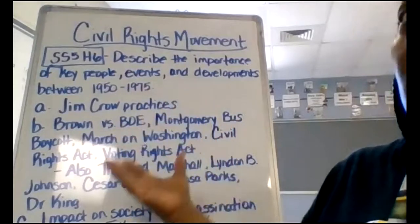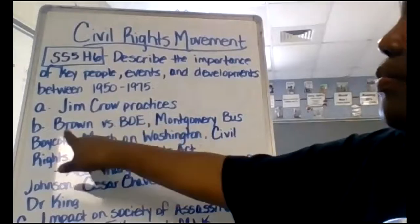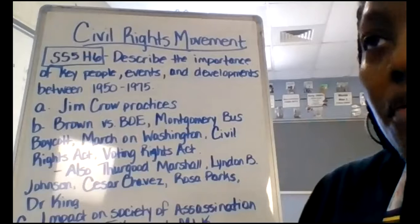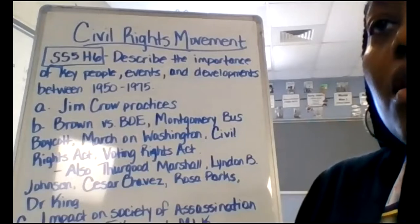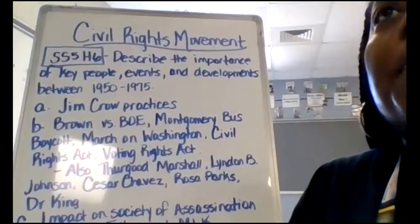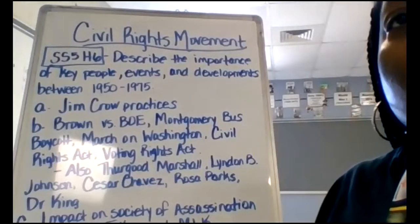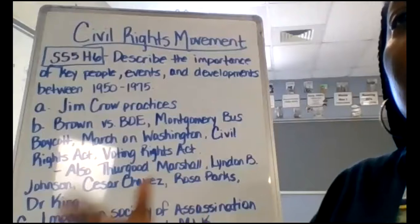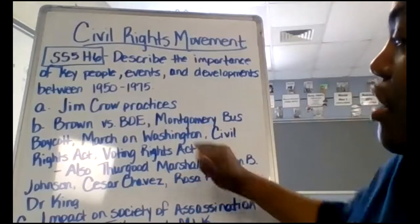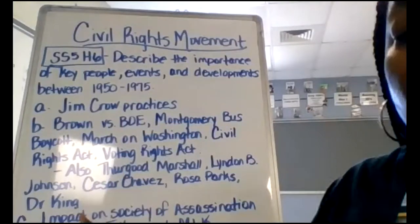Some other important civil rights activists: we looked at Thurgood Marshall, who was the lawyer of Linda Brown and her family. Lyndon B. Johnson became president after the assassination of John F. Kennedy. Cesar Chavez was also a civil rights activist who helped farmers and migrant workers — he actually gave a lot of civil rights to migrant workers. Rosa Parks was very instrumental during the Montgomery Bus Boycott, and of course, Dr. King.